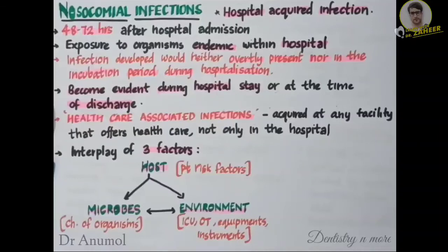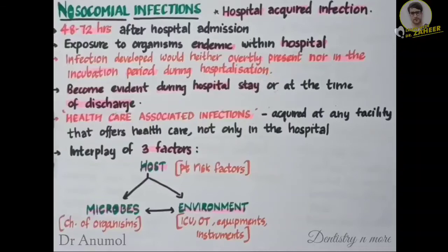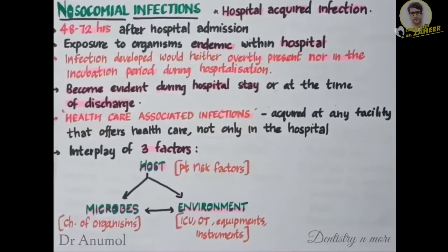The three factors are host factors, microbial factors, and environmental factors. Host factors include patient risk factors: the genetic predisposition of the patient, the immunity of the patient, and the food habits and lifestyle of the patient. Microbial factors include the characteristics of microorganisms. Environmental factors include intensive care units, operation theaters, equipment, instruments, etc.